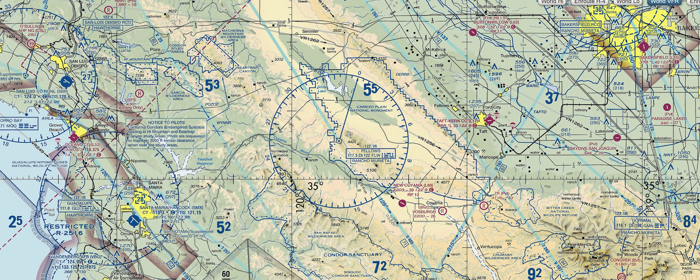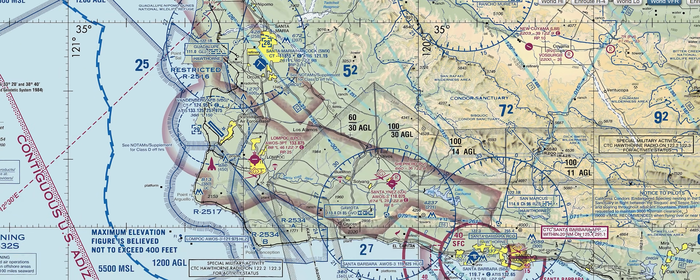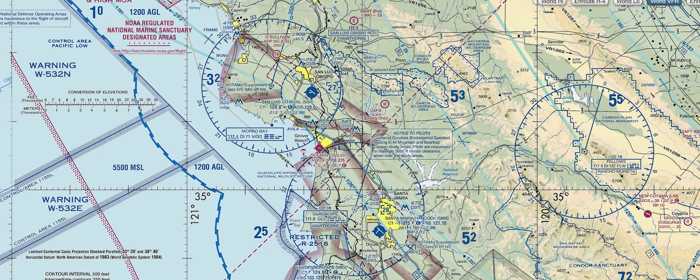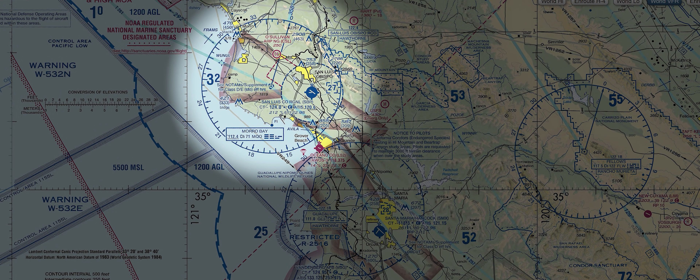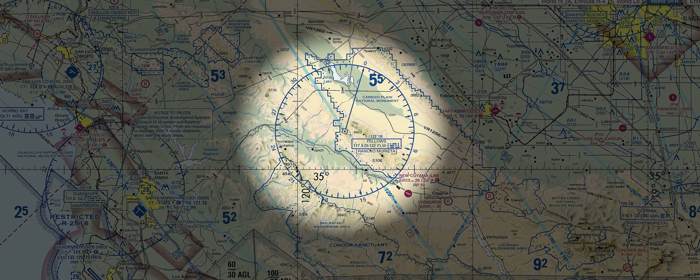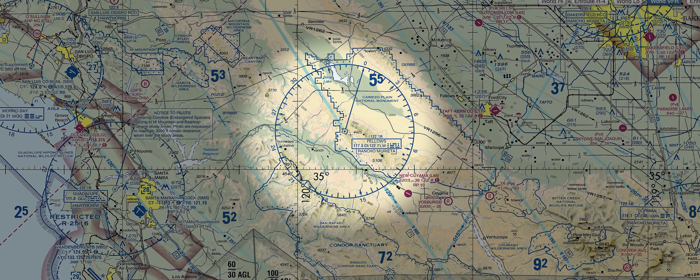Here on SkyVector.com I have the World VFR map pulled up. This blue compass rose represents the area around a VOR — whenever you see it, a VOR is in the middle. Here's one called the San Marcos VOR near Santa Barbara. Over to the west, we have the Morro Bay VOR next to the San Luis Obispo Airport. Then over here we have the Fellows VOR, which is on a mountain range and not specifically next to any airport.